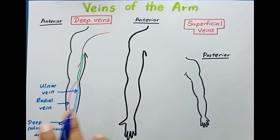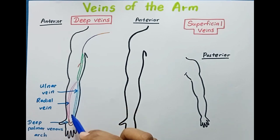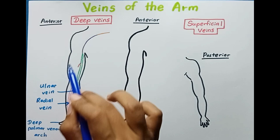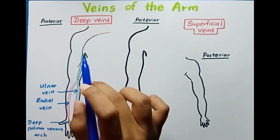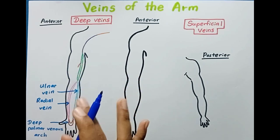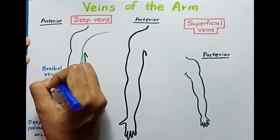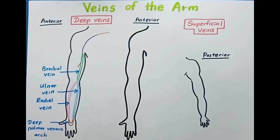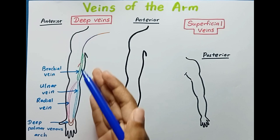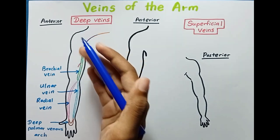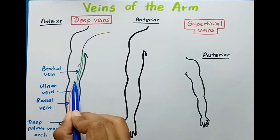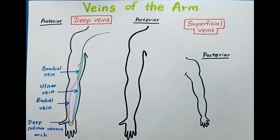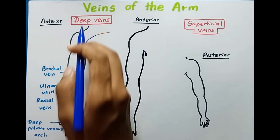These two veins join together at the elbow to form the brachial vein. In this green color you can see the brachial vein. These are paired veins that run alongside the brachial artery in the upper arm, beginning at the elbow from the uniting of the radial and ulnar veins, and travelling up to the shoulder.